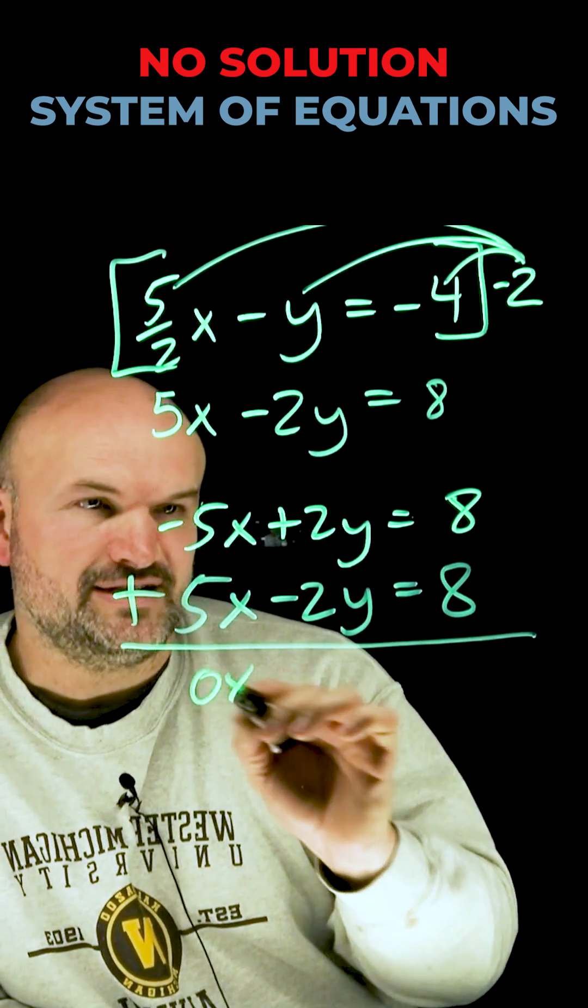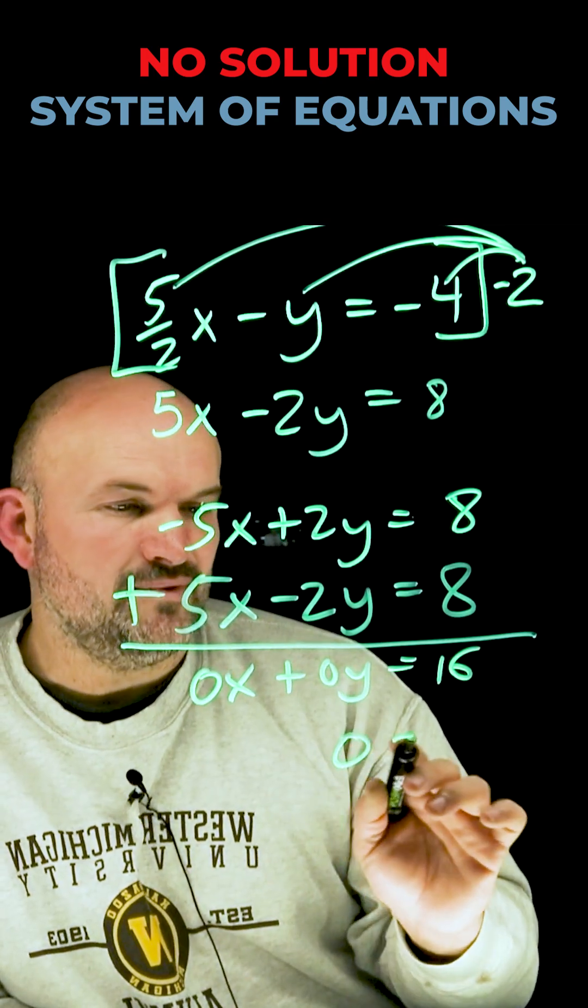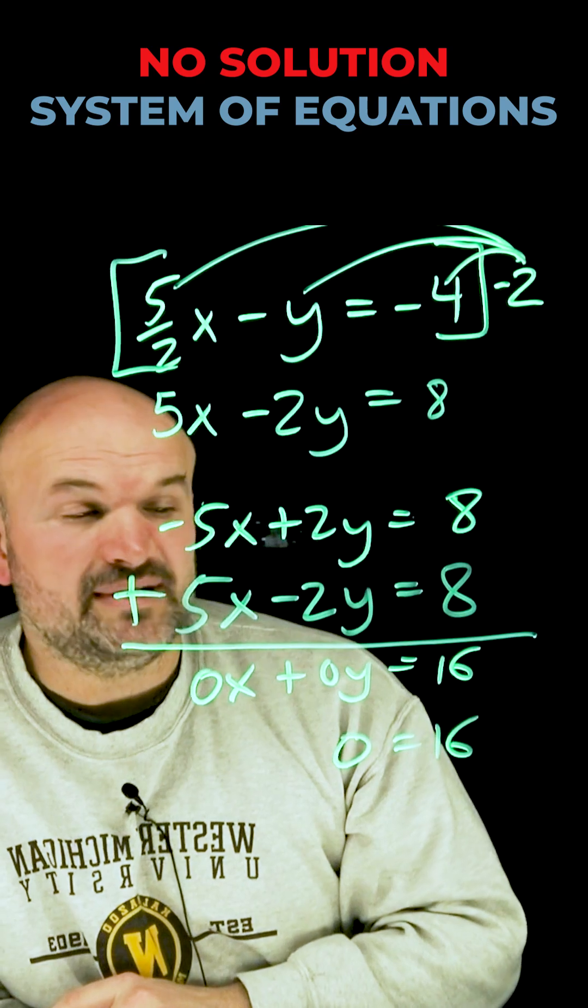When I add the two equations, I get 0x plus 0y is equal to 16. Further simplifying that, I get 0 equals 16, which ladies and gentlemen is never true.